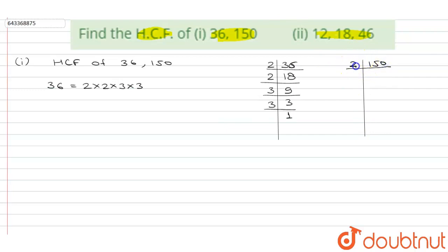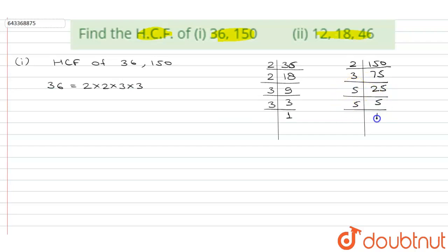Similarly, we'll factorize 150. Since 150 is divisible by 2, we divide by 2 to get 75. Now 75 is divisible by 3, so we divide by 3 to get 25. And 25 is divisible by 5 only, so we get 5 × 5. Therefore the factorization of 150 is 2 × 3 × 5 × 5.